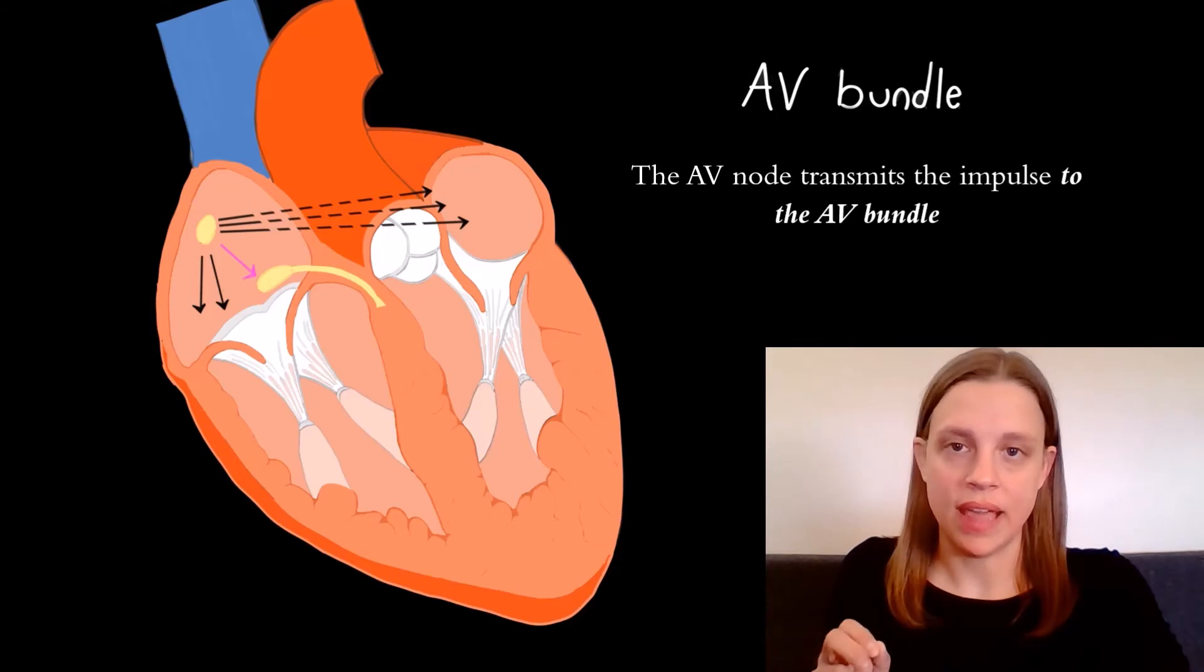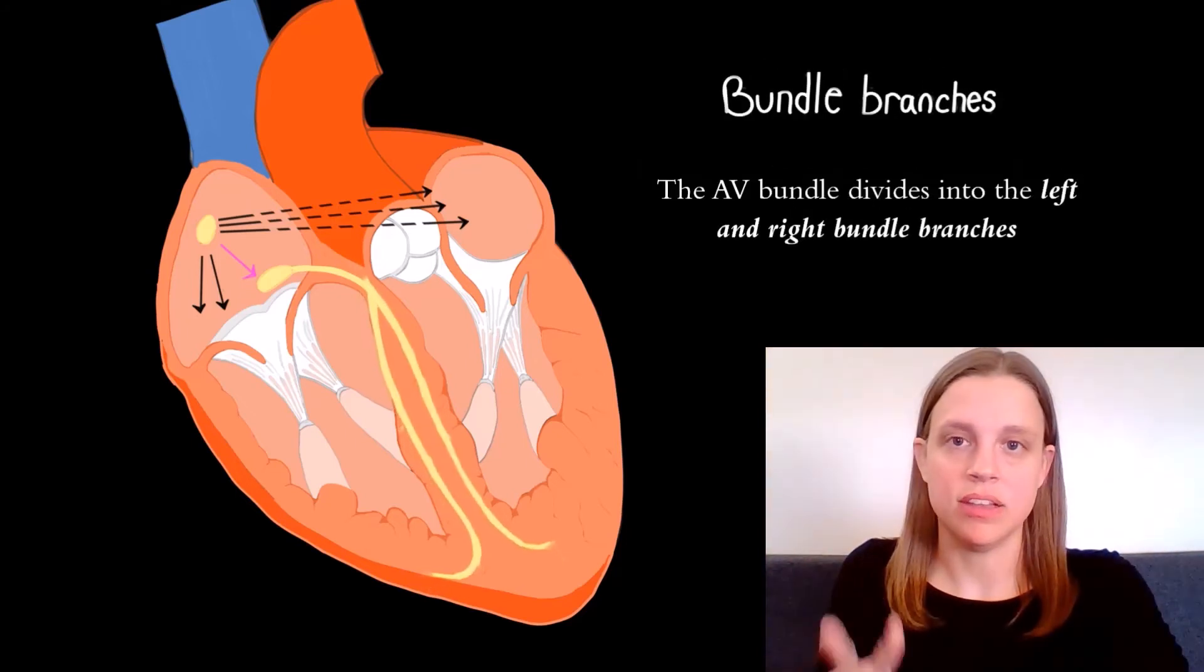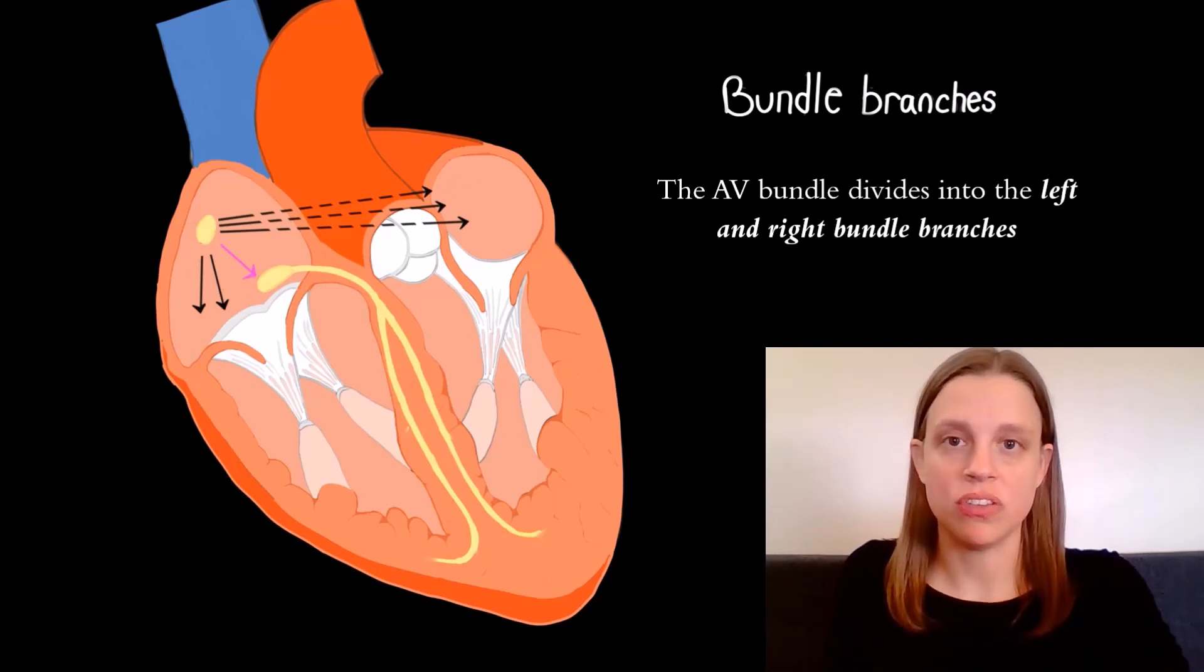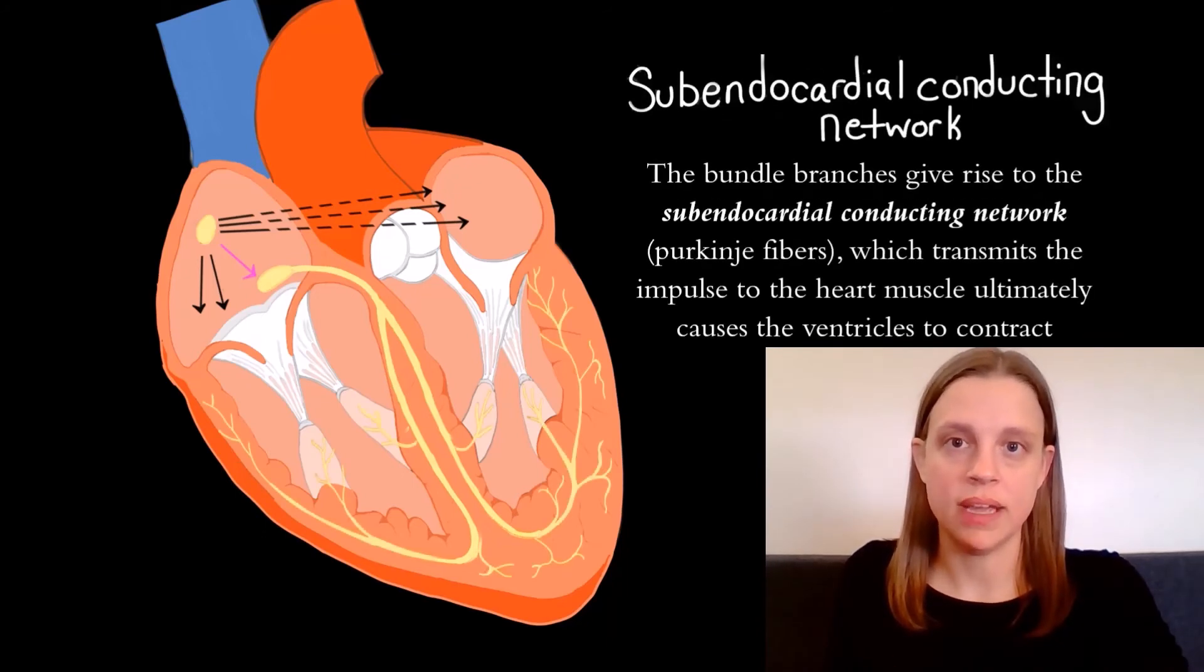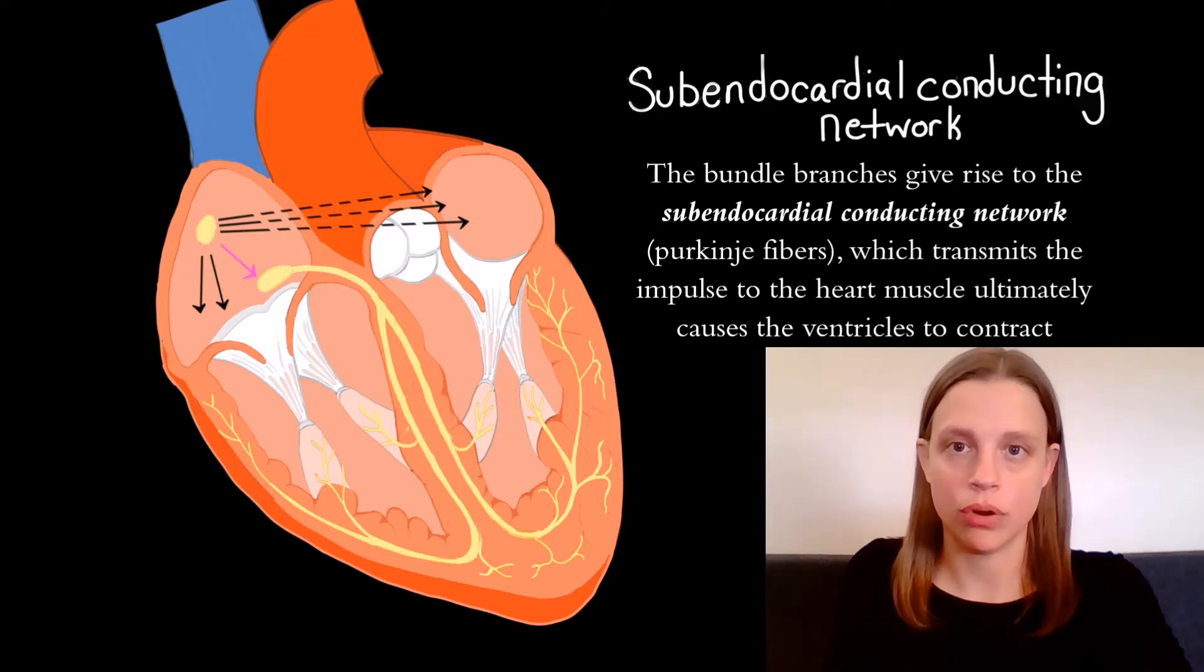and the AV bundle then divides into the left and right bundle branches into the subendocardial conducting network, also known as the Purkinje fibers.